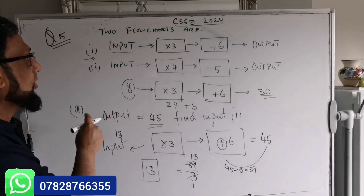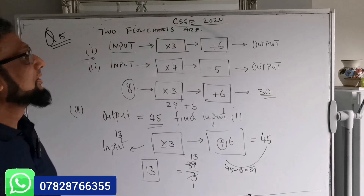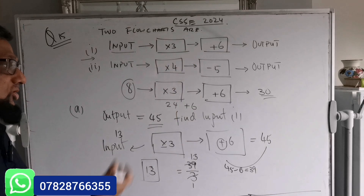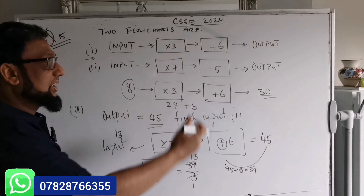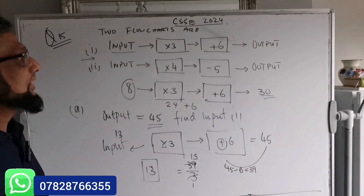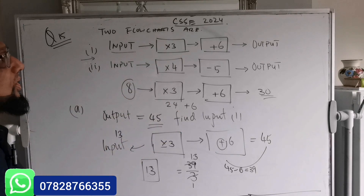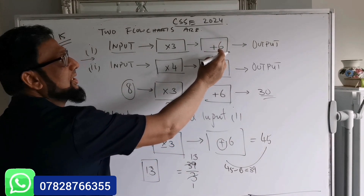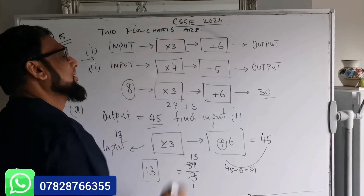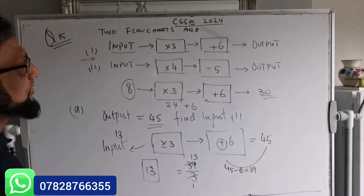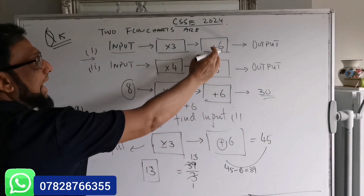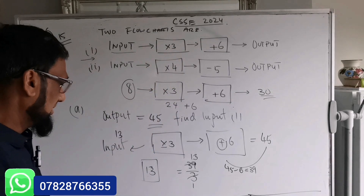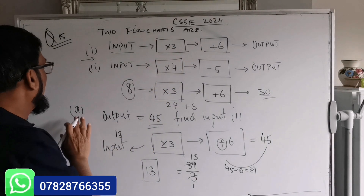So that's Part A for flow chart number one. When the output is given, you find the input using backward calculation. Keep in mind: a positive sign becomes negative, and times becomes divide when working backwards.